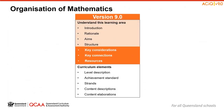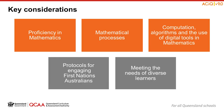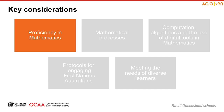Now that we have examined the structural changes in mathematics, let's move on to the final section of Understand This Learning Area, which provides support and advice for teachers when planning for the revised curriculum. On screen are the key considerations for mathematics. The two key considerations in grey – protocols for engaging First Nations Australians and meeting the needs of diverse learners – are in all learning areas. The three key considerations in orange are specific to mathematics and we will now take a look at them.